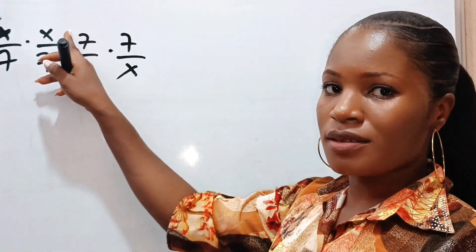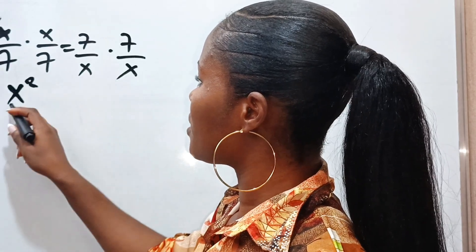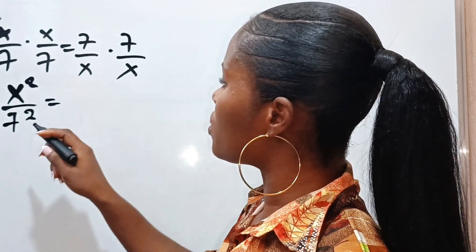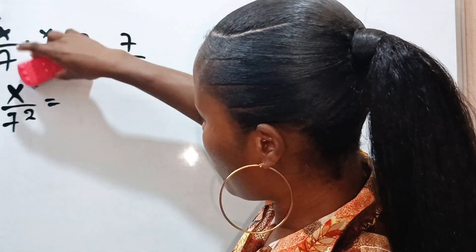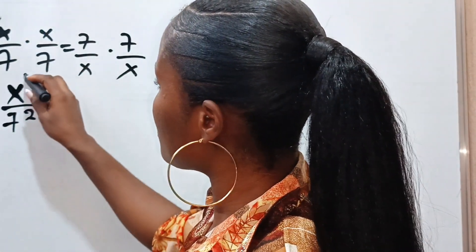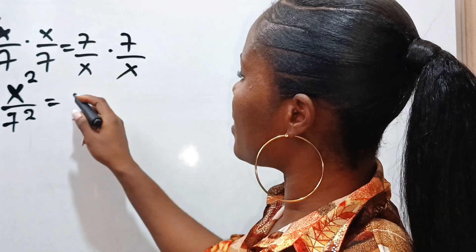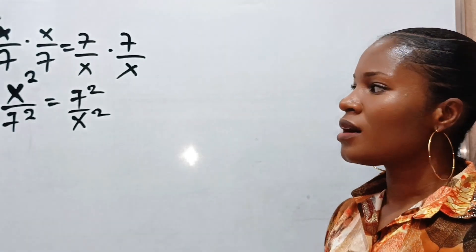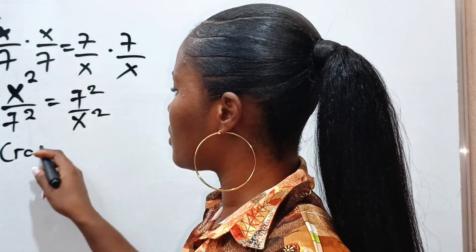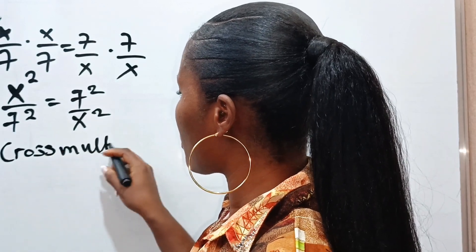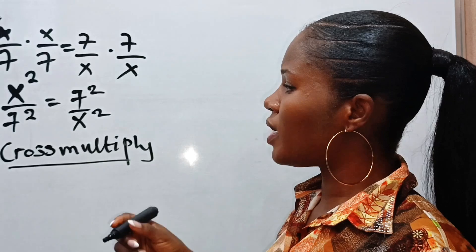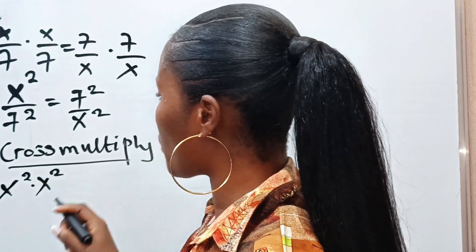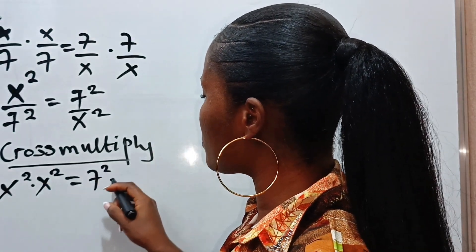x multiplied by x gives us x squared. So we have x squared divided by 7 squared is equal to 7 squared divided by x squared. Now let's cross-multiply. So we have x squared multiplied by x squared is equal to 7 squared multiplied by 7 squared.